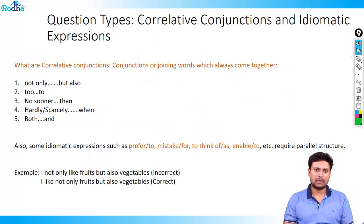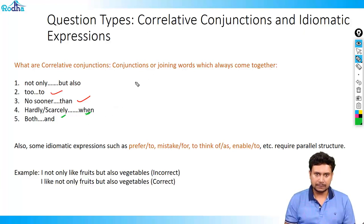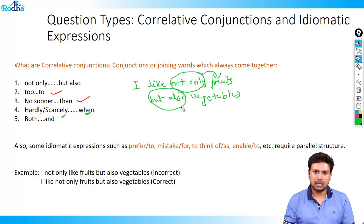What happens when you have correlative conjunctions and idiomatic expressions? There are certain conjunctions where words always come together. If there is 'not only,' it will always be followed by 'but also.' Similarly, 'too' follows 'to,' 'no sooner' follows 'then,' and 'hardly/scarcely' follows 'when.' For example: 'I like not only fruits but also vegetables' — 'not only' refers to fruits, 'but also' refers to vegetables. This is absolutely correct.